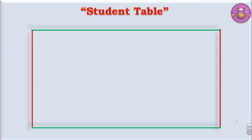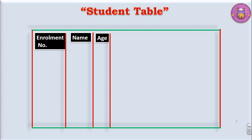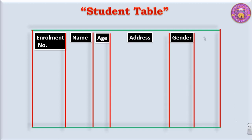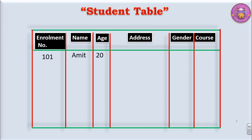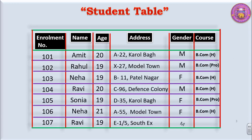Let's take up a particular table — this is the student table. One field is enrollment number, the second is name, the third is age, the fourth is address, and the next ones are gender and course. In this particular table, you will find that there is a repetition of names. The name Neha comes twice and the name Ravi comes twice.